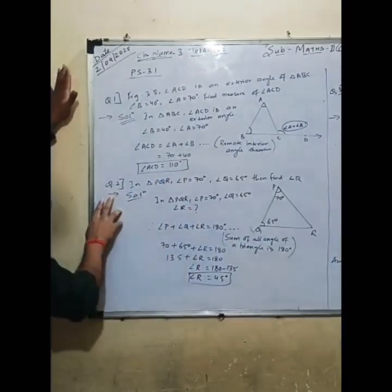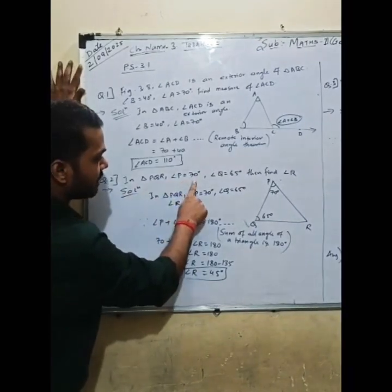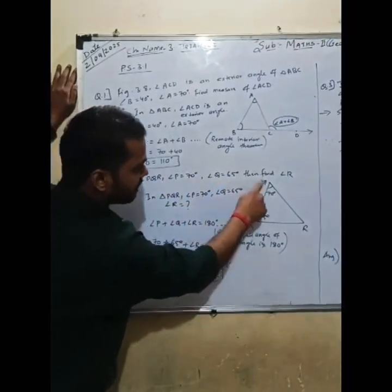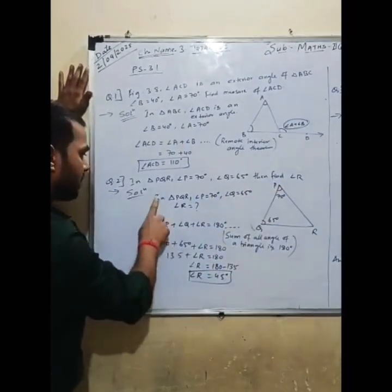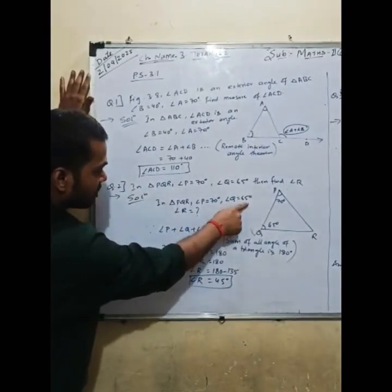Now the second question: In triangle PQR, angle P is equal to 70 degrees, angle Q is equal to 65 degrees, and find angle R. In triangle PQR, angle P equals 70 degrees, Q equals 65 degrees, and we have to find angle R.